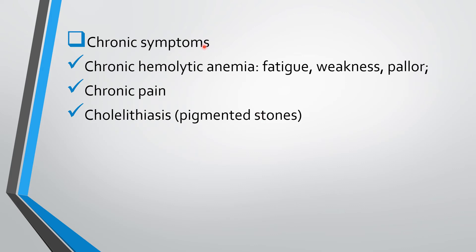That was the end of the acute symptoms. Now the second category is chronic symptoms. These include chronic hemolytic anemia manifested by fatigue, weakness and failure, chronic pain, and polylithiasis — the presence of gallstones or stones in the gallbladder.